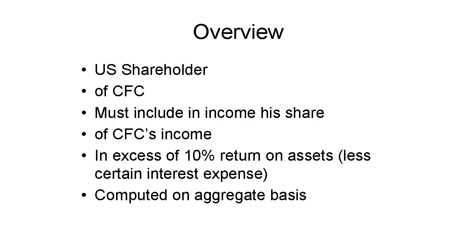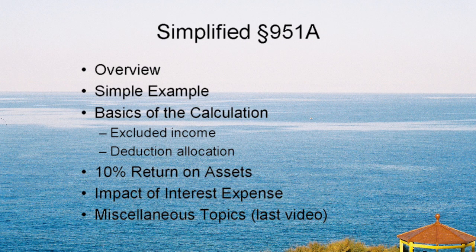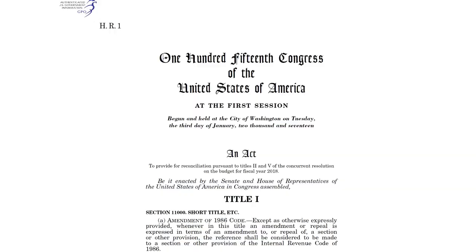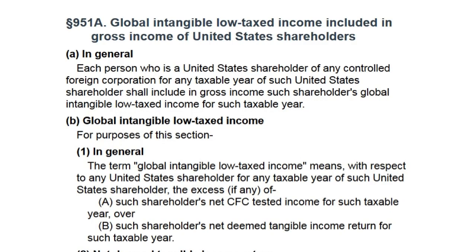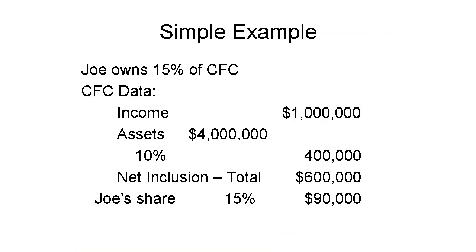Here's what the videos will cover. U.S. international tax rules underwent a sea change about a year ago in December 2017. International tax practitioners must rethink strategies and planning because of three brand new code sections. One of these is Section 951A. Let's start with a super simple example of what 951A does.